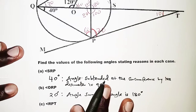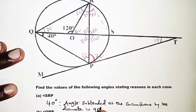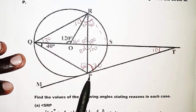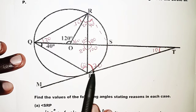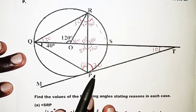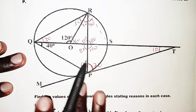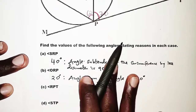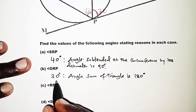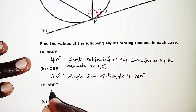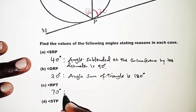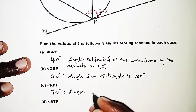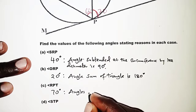For part C, angle RPT: RPT is 70°. The reason is that angles in alternate segments are equal.